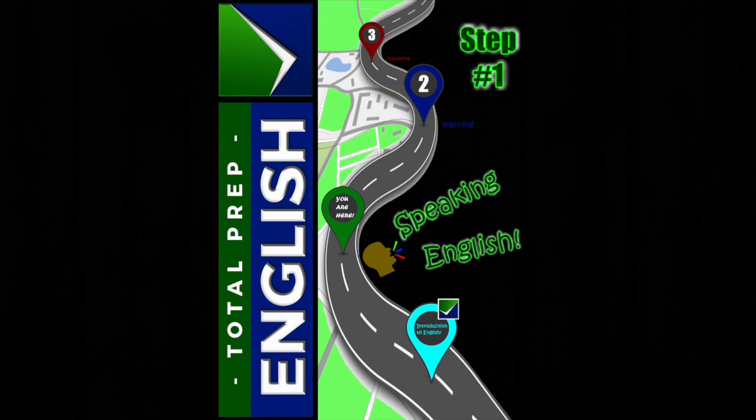Page 63. Parts of the house: attic, second floor — bedroom, hall, bathroom, balcony. First floor — kitchen, dining room, living room, garage. Basement, cellar, laundry room. Let's identify the following vocabulary.